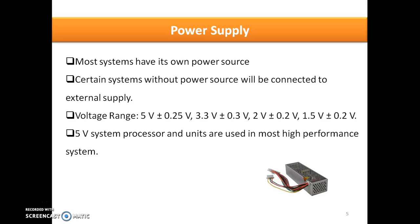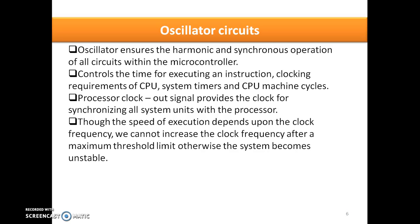The voltage ranges are listed here, which you can see on the screen. In most systems, a 5-volt system processor will be used in order to get the best performance, because power supply has a relation with propagation delay. So in order to get the best performance, 5-volt system processors will be used in the oscillator circuit.